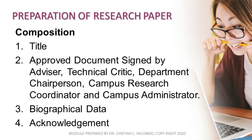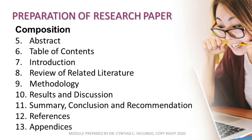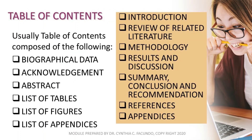Now let's start with the preparation of the research paper. The composition of your research paper includes: (1) title, (2) approved document signed by advisor, technical critic, department chairperson, campus research coordinator, and campus administrator, (3) biographical data and acknowledgement, (4) abstract, (6) table of contents, (7) introduction, (8) review of related literature, (9) methodology, (10) results and discussion, (11) summary, conclusion, and recommendation, (12) references, and (13) appendices.